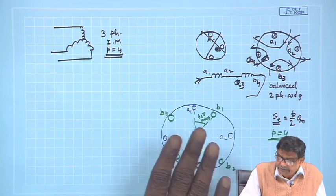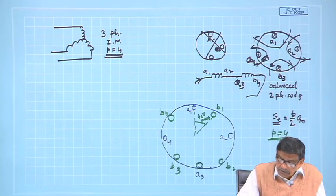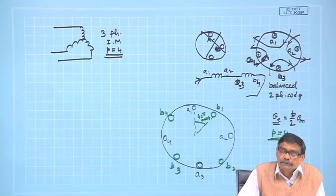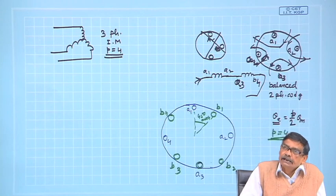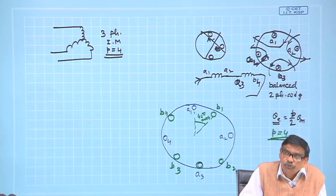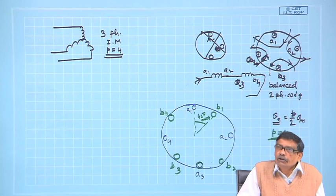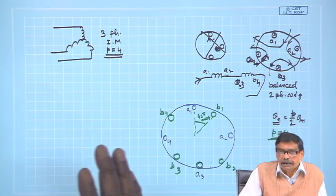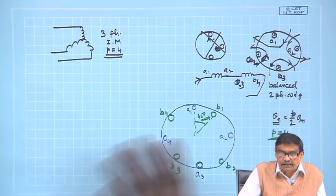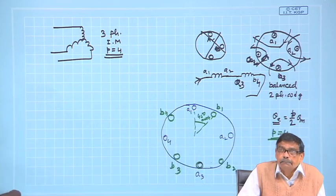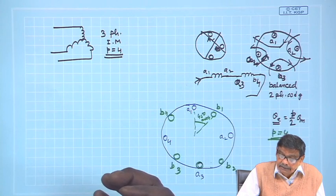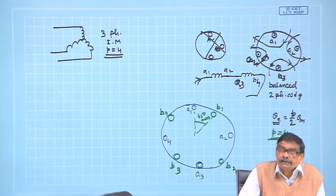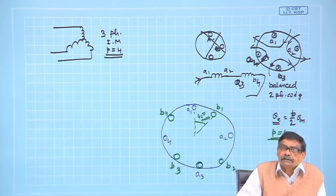The A-phase and B-phase fields will be 90 degrees apart, so it is a balanced two-phase winding. Such a balanced two-phase winding, if excited from balanced two-phase current, will also produce a rotating magnetic field. Any balanced polyphase winding — two-phase, three-phase, six-phase — excited by balanced polyphase currents of equal number of phases will create a rotating magnetic field.